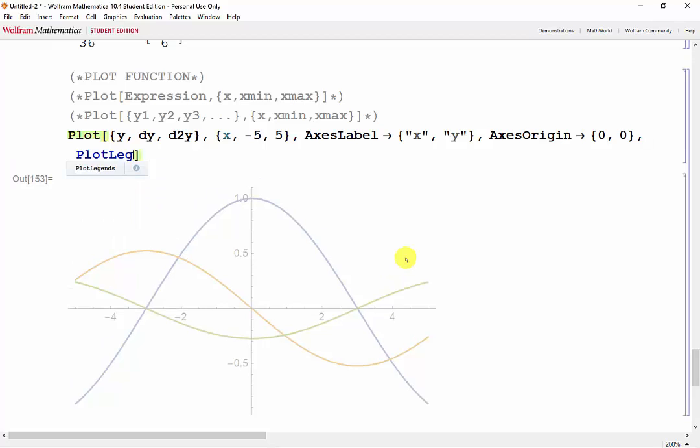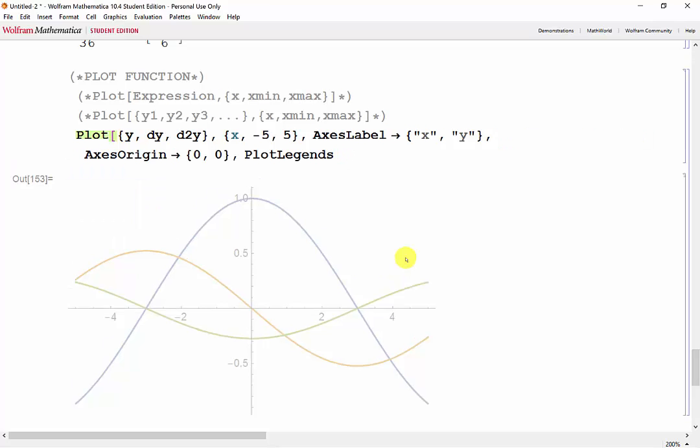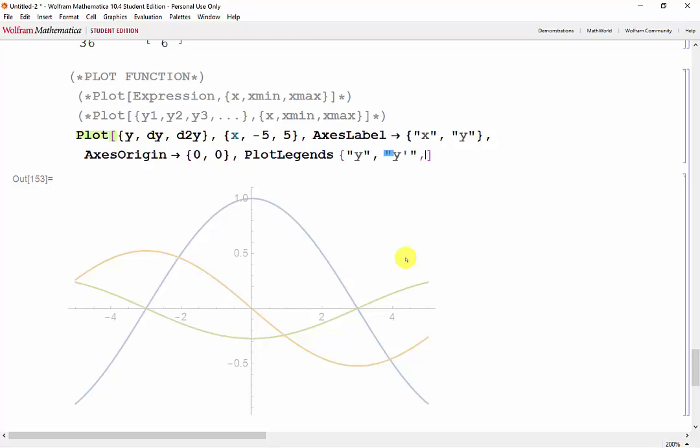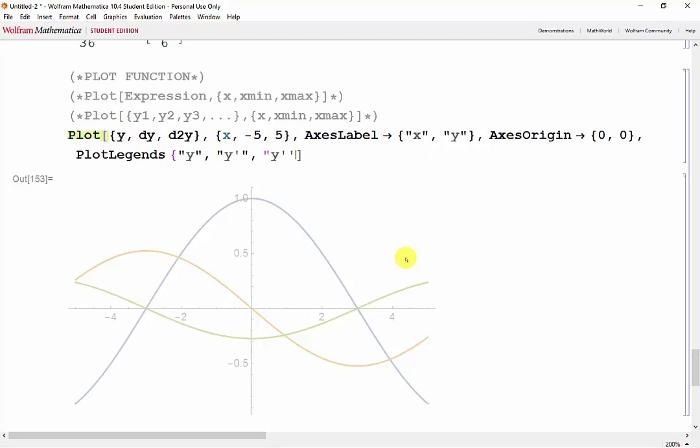And we can use a new function, plotLegends, in order to label each of our lines. And this is in the order that they're inputted.